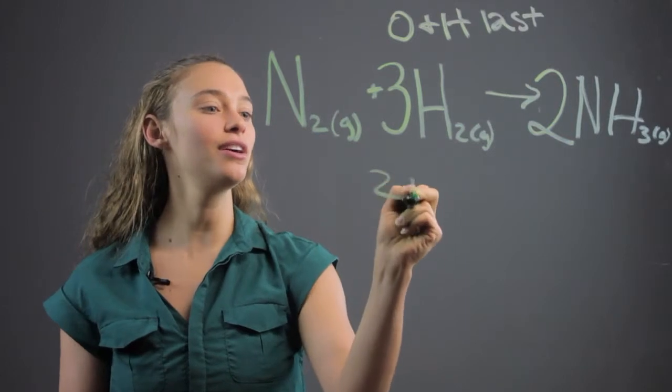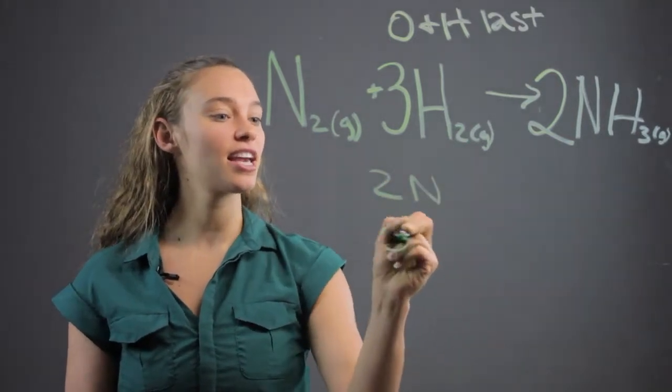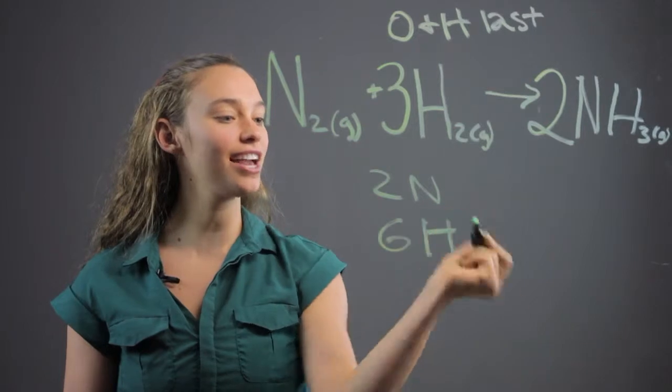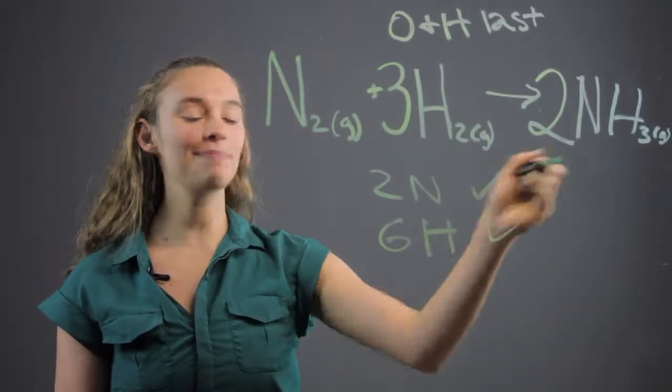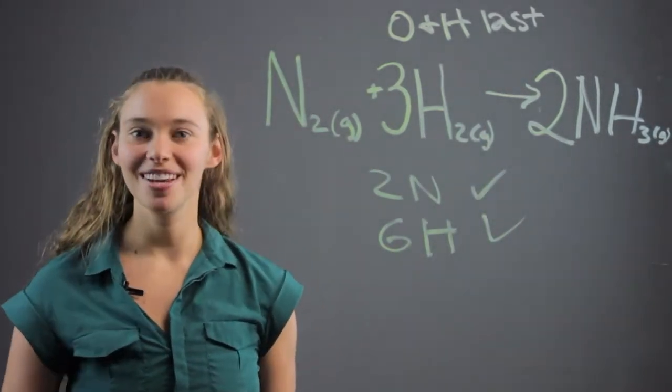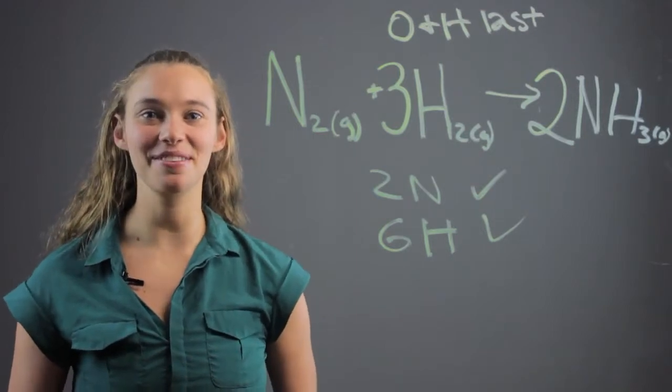So that's two nitrogens on both sides, six hydrogen on both sides. So we see that it's balanced, and we balance the equation. I'm Rachel, and thank you for learning with me today.